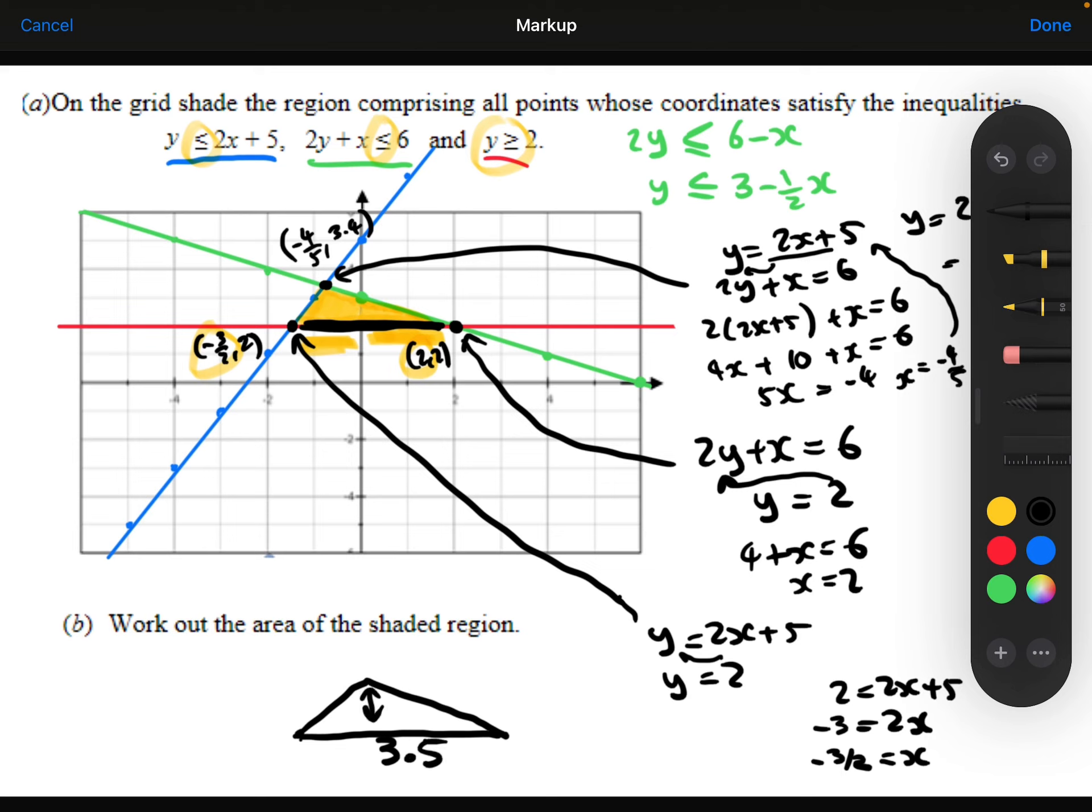The height of this triangle is going to be 1.4. I know that because the y coordinate here is 3.4. The y coordinates here are 2. 3.4 take away the 2 is 1.4.